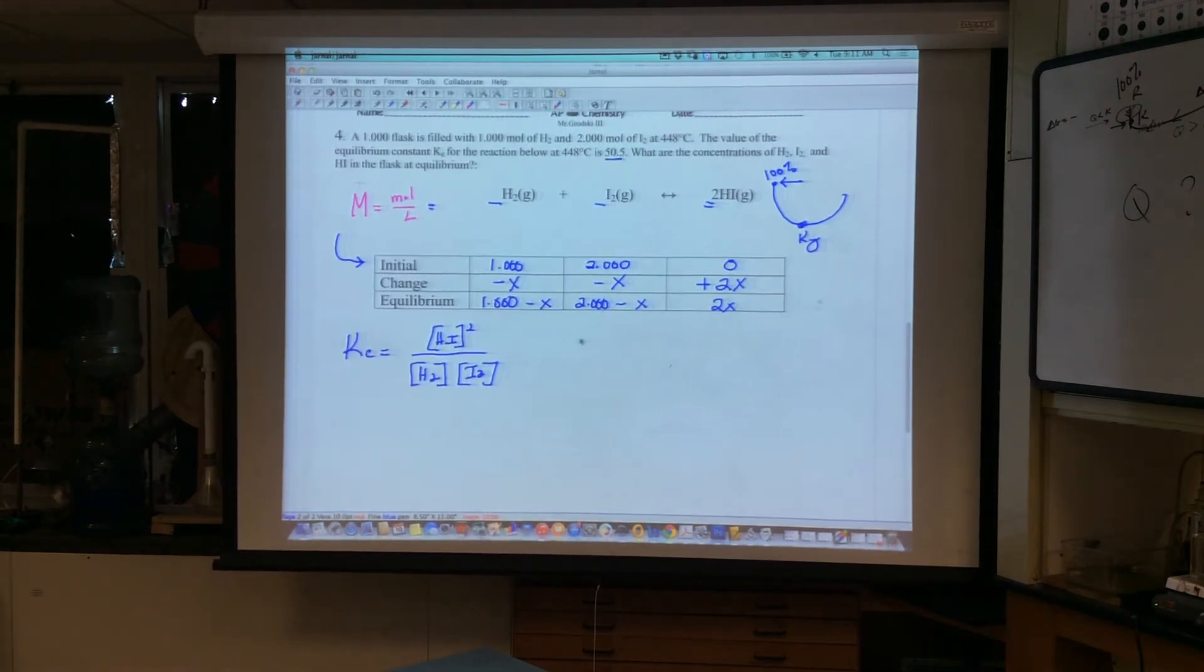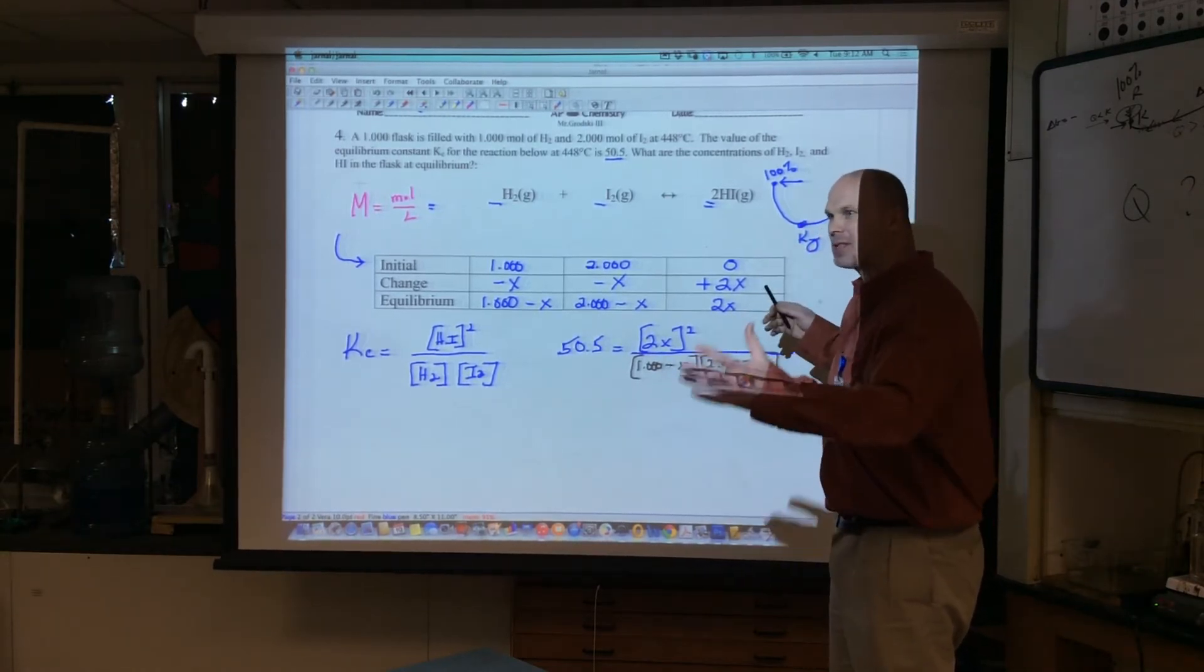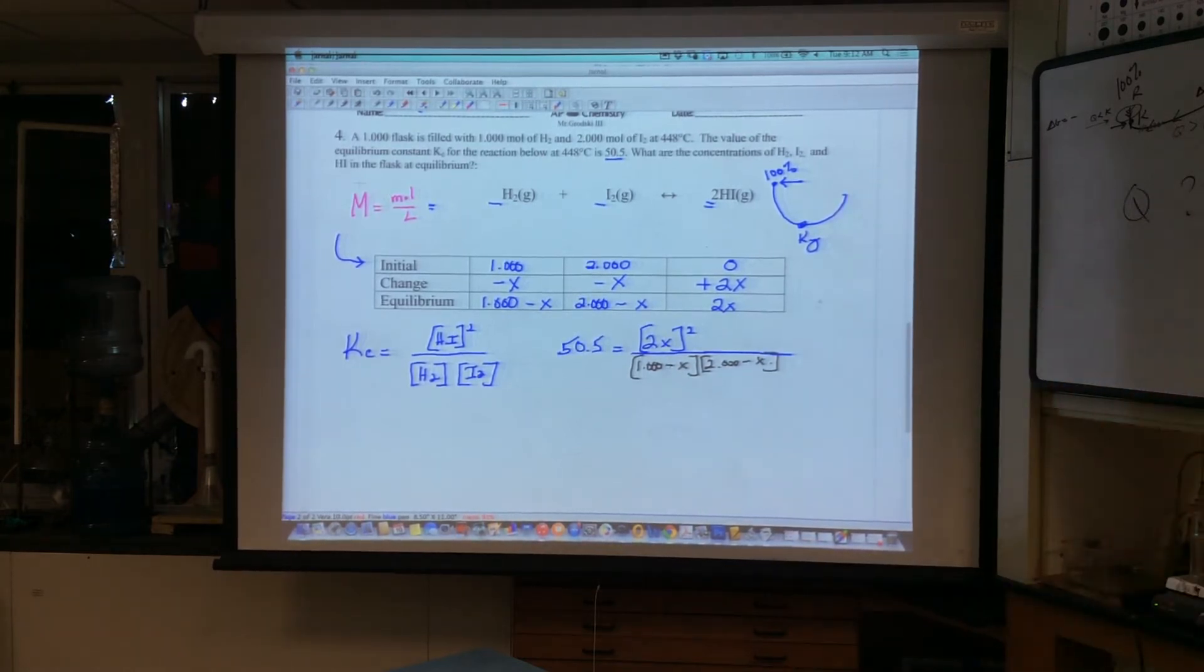Now, let's solve. Well, we know the value of KC is 50.5. And it's equal to what? Well, HI squared would be 2X squared. Then we have what? We've got 1.000 minus X and 2.000 minus X. And yes, someone just called it. To solve for X, we would need the quadratic here. This would be 4X squared. We'd FOIL this. We'd make it so it's equal to zero, and we would use our quadratic formula.